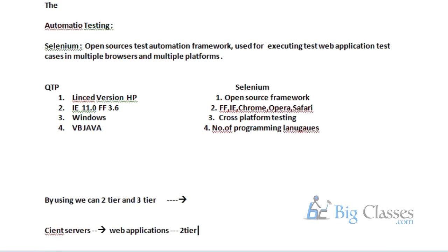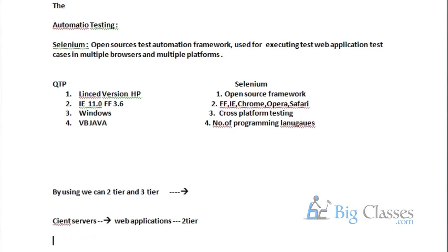I will show you in my application — I have a Windows-based application and a web-based application. I'll show you what is Windows and what is web. Remember, Windows-based means client-server application — we have to install it on our machine. Even some developer applications we install, but we access them through internet. By using QTP, we can automate two-tier applications along with three-tier applications also.